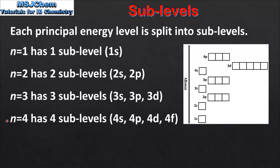Finally, the fourth principal energy level, n=4, has four sublevels: the 4s, 4p, 4d, and 4f sublevels. On the right we can see these sublevels arranged in order of energy, with the lowest energy being the 1s sublevel and the highest energy being the 4p sublevel.